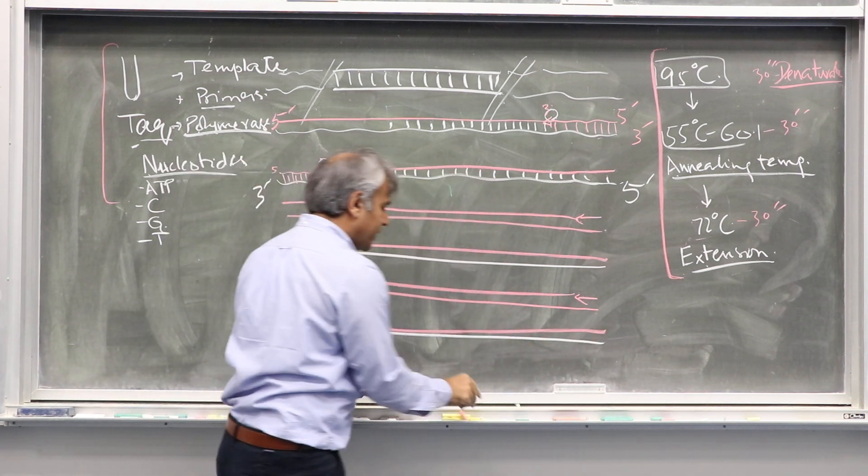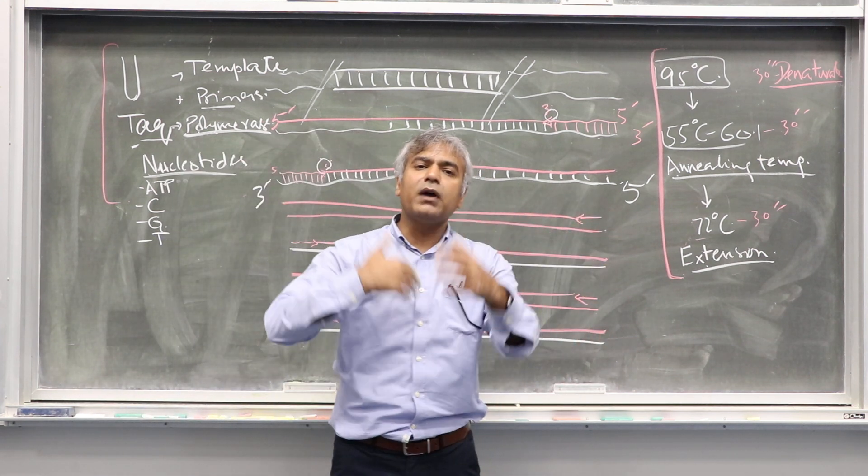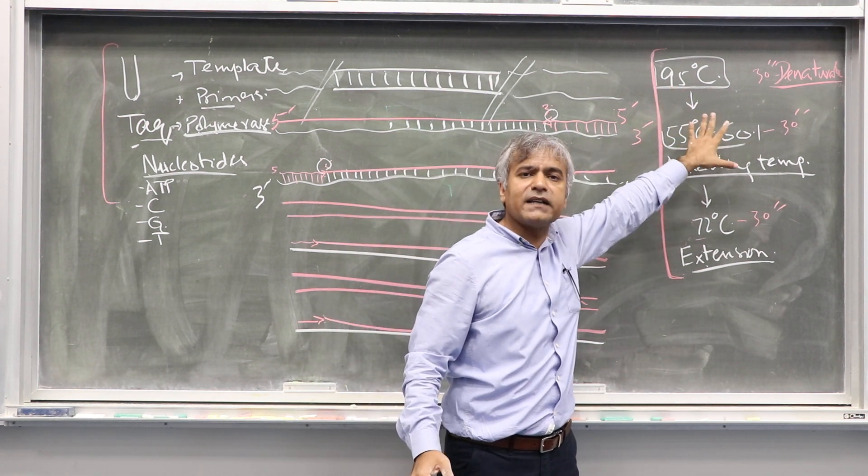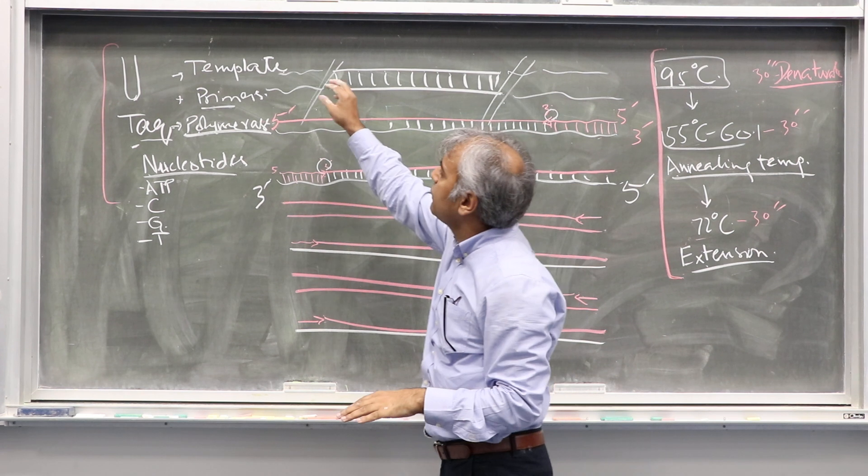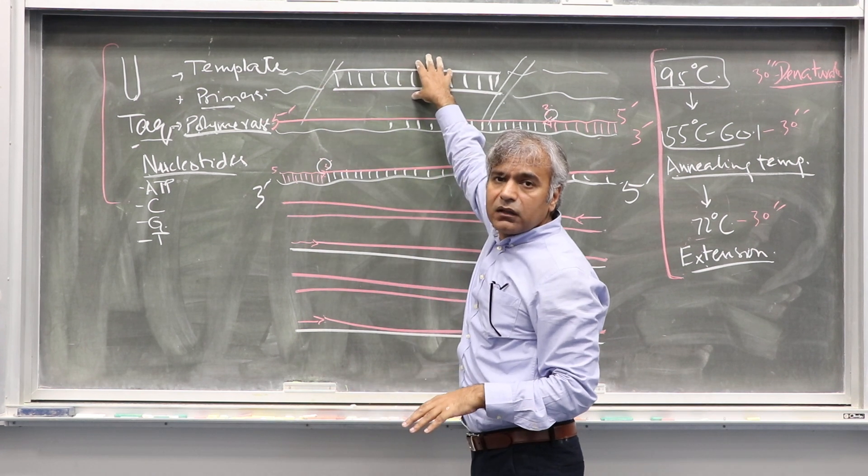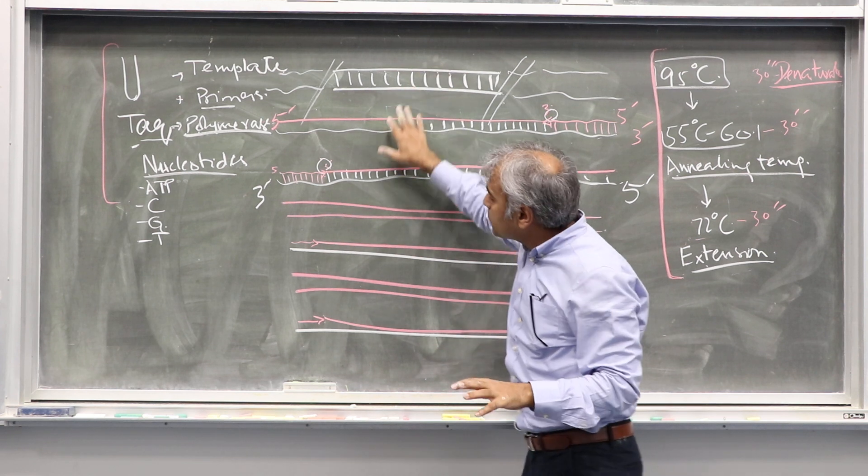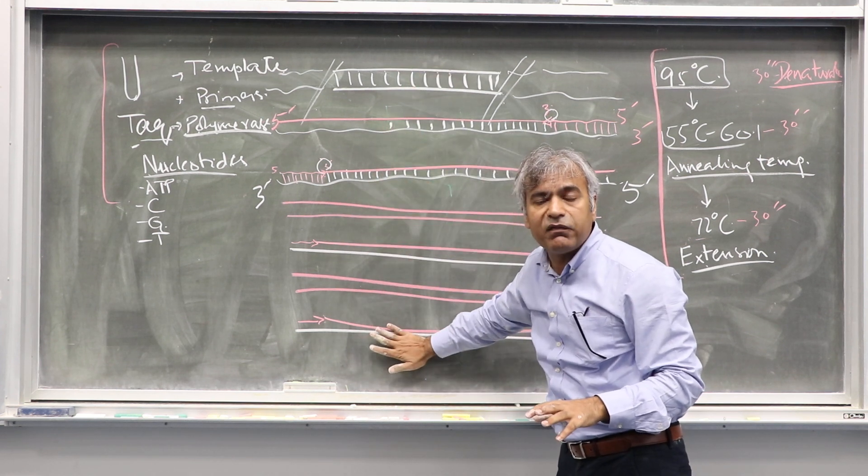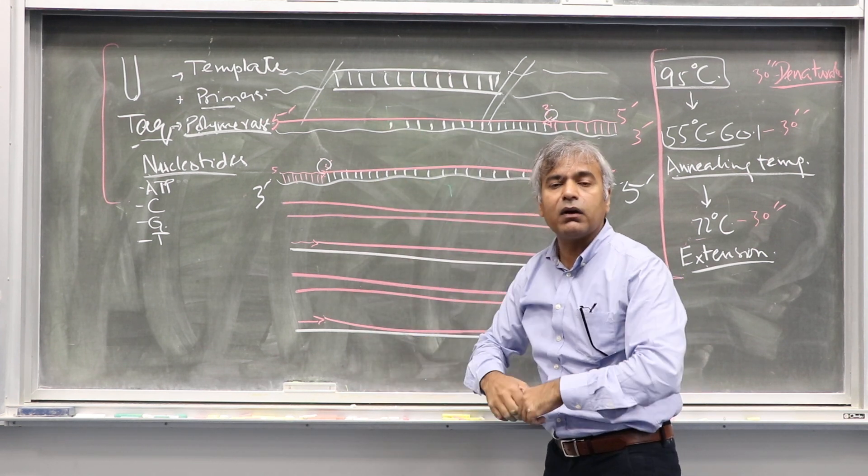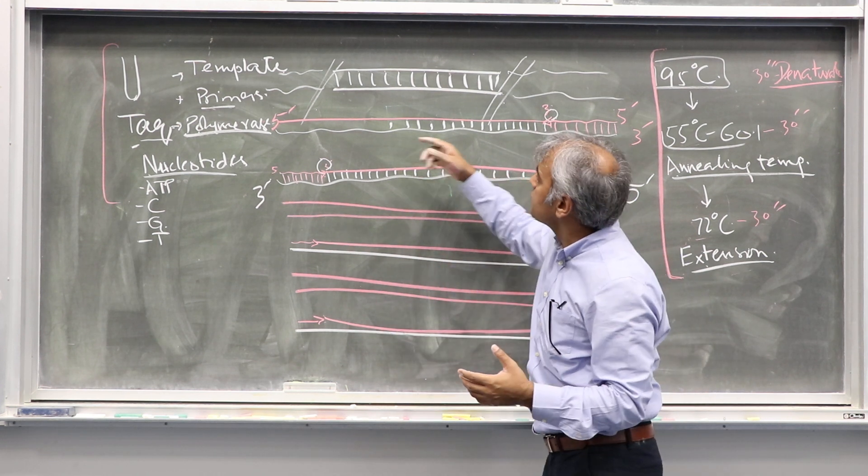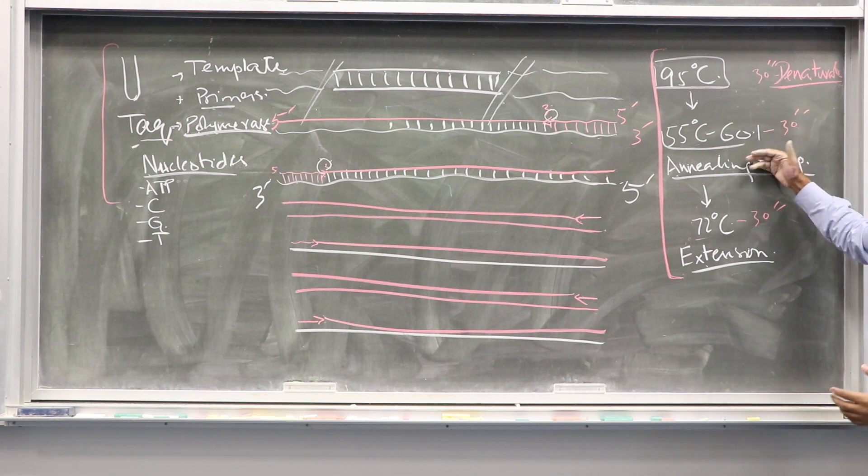You tell the machine to have 35 cycles or 40 cycles or 30 cycles. You can imagine if you started with 100,000 molecules of your template, exponentially you will amplify after 30 cycles and you will have a lot of DNA. We call this chain reaction.